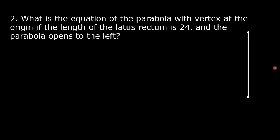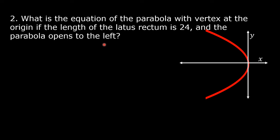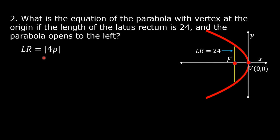Let us say this is the y-axis and this is the x-axis. This is the parabola that opens to the left, with the vertex at the origin. The coordinates of the vertex are (0, 0). This is the focus of the parabola, and this is the Latus Rectum. According to the problem, the Latus Rectum is equal to 24. But we know that the length of the Latus Rectum is equal to the absolute value of 4p. By the transitive property of equality, the absolute value of 4p is equal to 24.